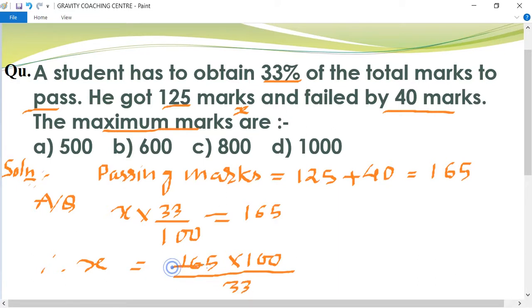So canceling: 11 into 11 is 1, 5 into 55, and 3 into 3. So 500 is the total marks. Option A is the right answer. Thank you very much.